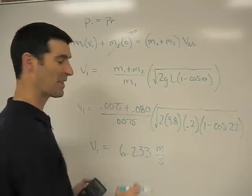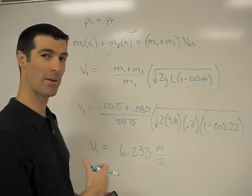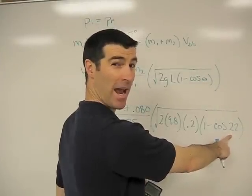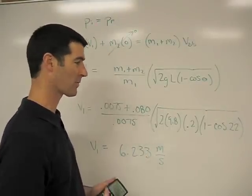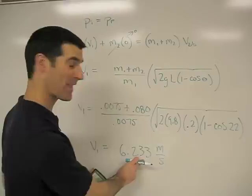V1 is 6.233 meters per second. Now that many decimal places from the data we gathered is way too accurate. The angle that we found, 22 degrees, was an average, and it did vary between about 21 and 23 degrees. So plus or minus 1 degree ends up making this number a little too precise to say that.